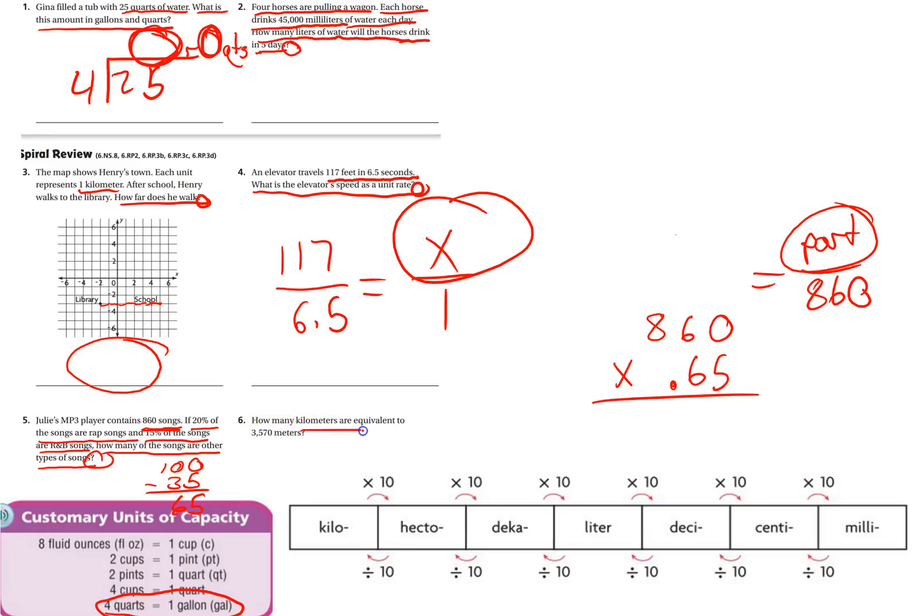Okay, number six: how many kilometers are equivalent to 3570 meters? So they want us to go from meters, which this middle term could be meters, liters, it's just the general term, and then this is where they start adding the different prefixes to it. So even though it says liters here, we can say that is the same thing as meters as far as the metric system goes.